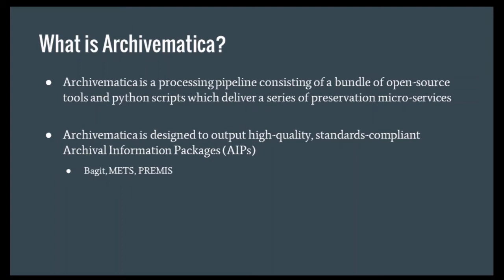You can develop different pipelines to carry out different microservices and actions depending on the type of material you're looking to preserve. For research data we might want to treat it in a particular way, whereas for traditional born-digital archive material received from an external depositor we might carry out a different series of preservation microservices. Ultimately, Archivematica is designed to produce a high-quality standards-compliant archival information package referencing the OAIS — which it generates as a BagIt package. Within that BagIt, it holds packaged information within a METS container and makes strong use of the PREMIS data dictionary to capture associated information about the content.